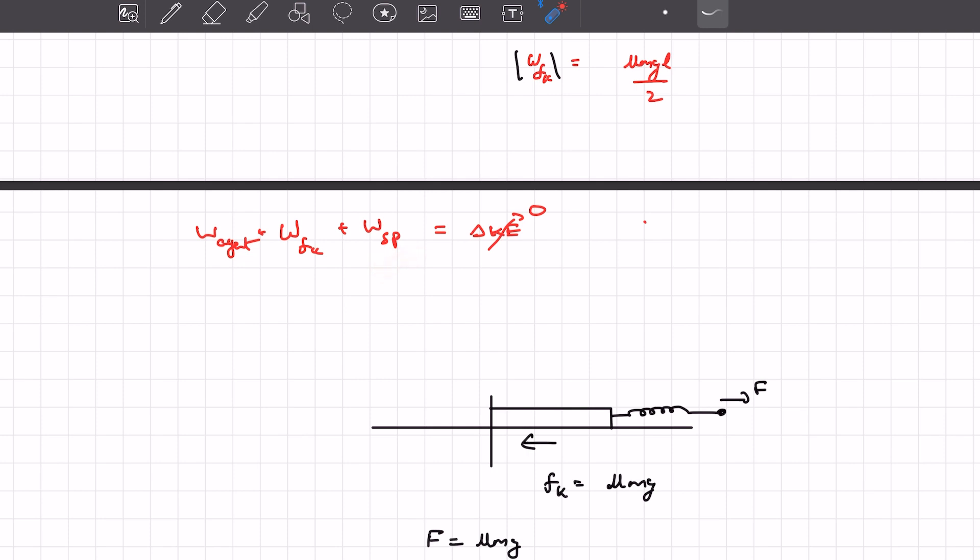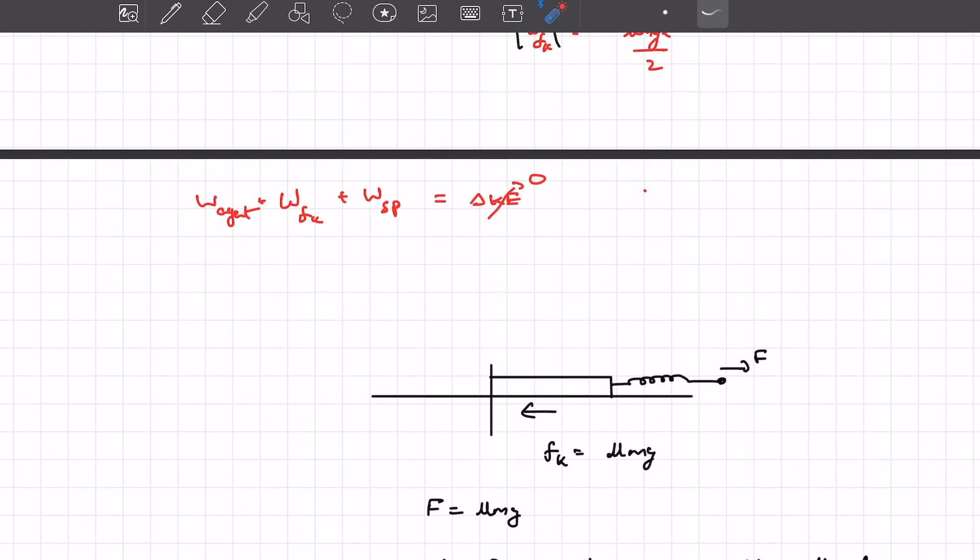We have to determine the work done by spring, and we know that we can write it as the negative of the change in potential energy in the spring. Now for writing the change in potential energy, we need the final extension.